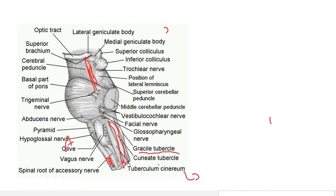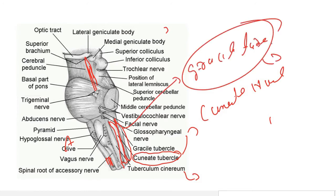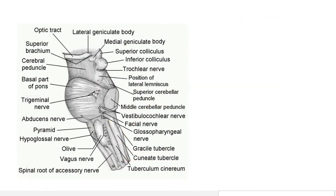The next external features are the cuneate tubercle and the gracile tubercle. The cuneate tubercle is due to the cuneate nucleus, and the gracile tubercle is due to the gracile nucleus. This is viewed from the lateral side of the brainstem.